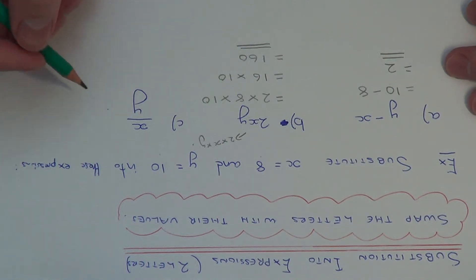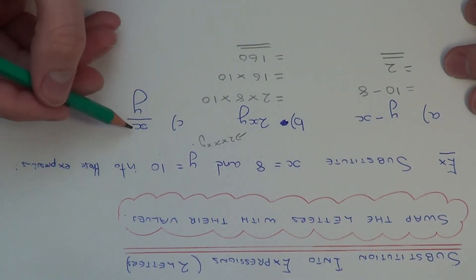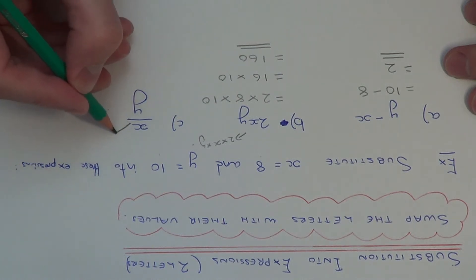Let's have a look at our final example. This time we have x line y. This line here actually means we are dividing, so we are doing x divided by y.